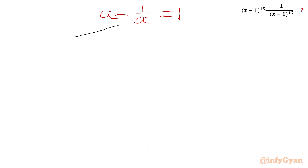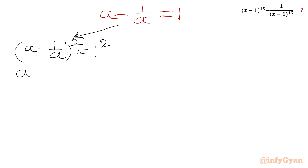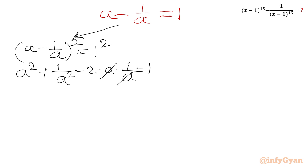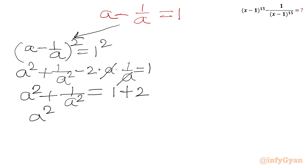I will square both sides of A minus 1 over A equal to 1. Applying the (a minus b) squared formula, we get A squared plus 1 over A squared minus 2 times A times 1 over A equal to 1. Cancelling A and A, we get A squared plus 1 over A squared equal to 1 plus 2, which is 3.